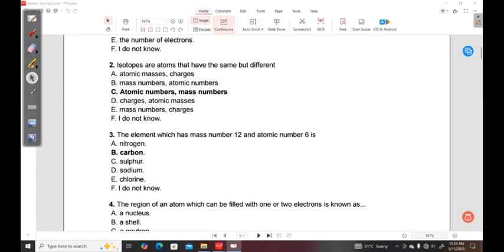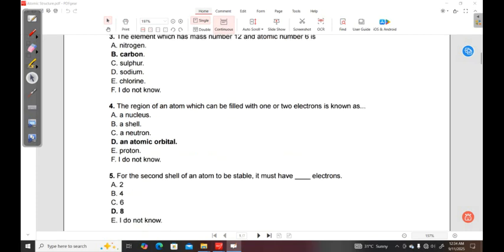Question four: The region of an atom which can be filled with one or two electrons is known as: A, a nucleus; B, a shell; C, a neutron; D, an atomic orbital; E, a proton.